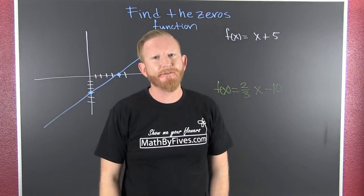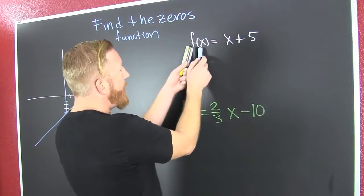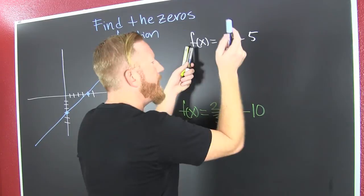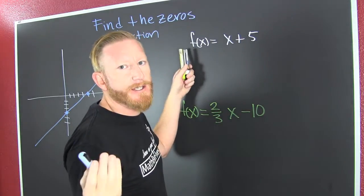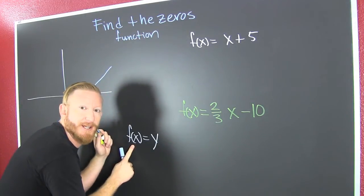We want to find the zeros of a function when we're using the notation. This f of x is x plus 5. We're trying to find the zeros. When f of x is equal to zero, f of x is the function formerly known as y.